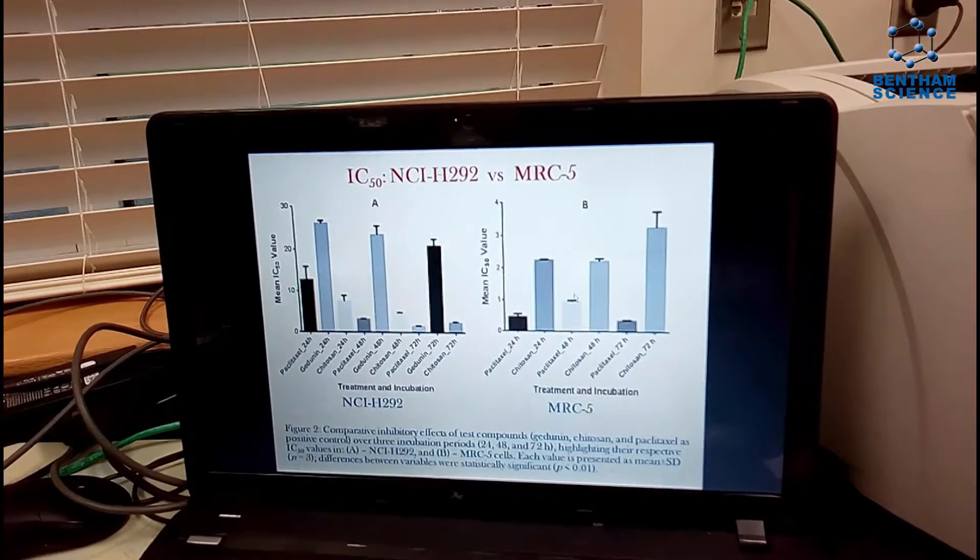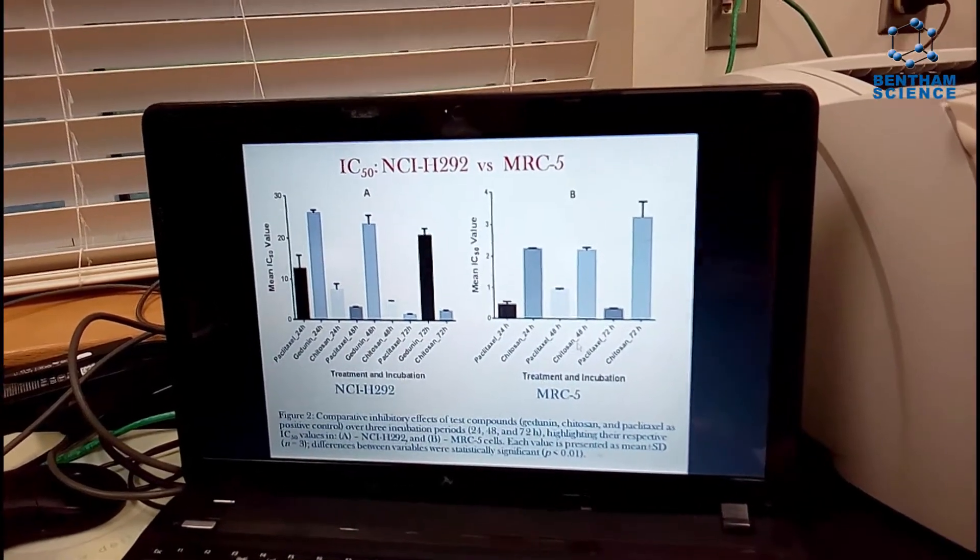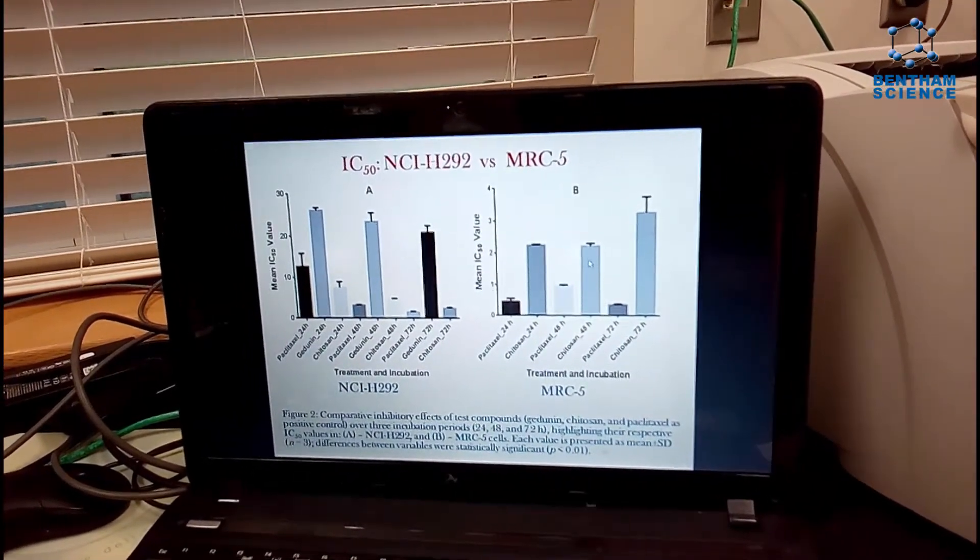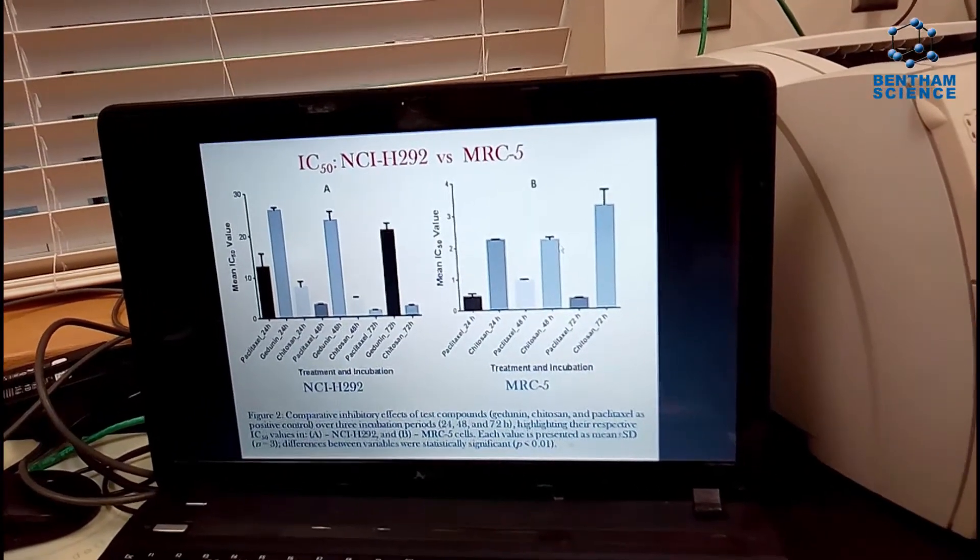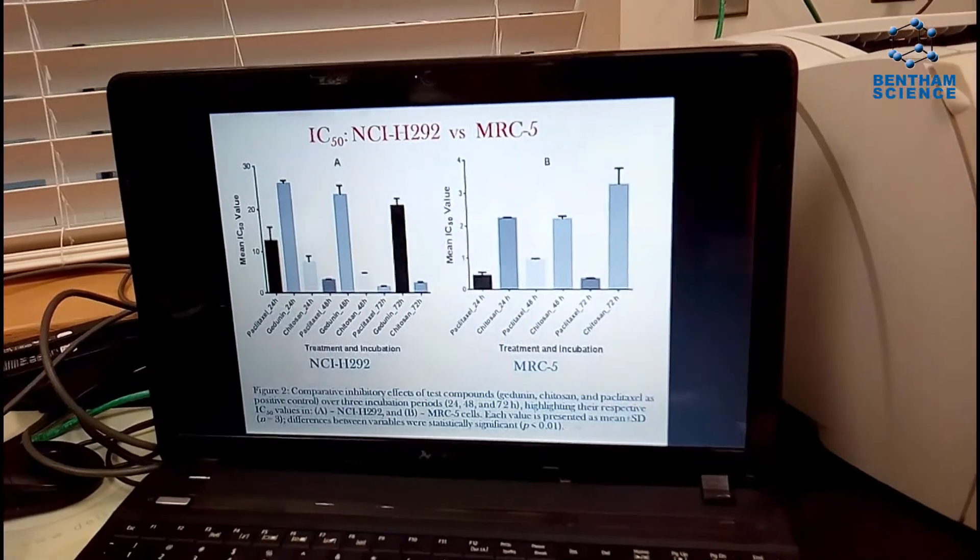On the other hand, for the normal cells, chitosan had higher IC50 values compared to paclitaxel, showing that the normal cells tolerated it more.